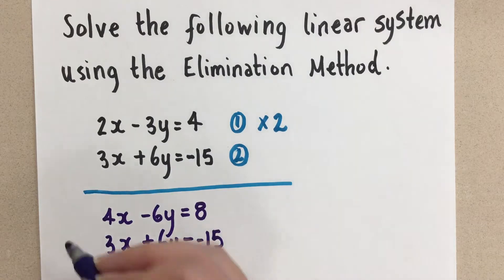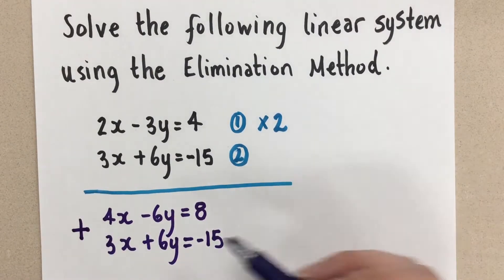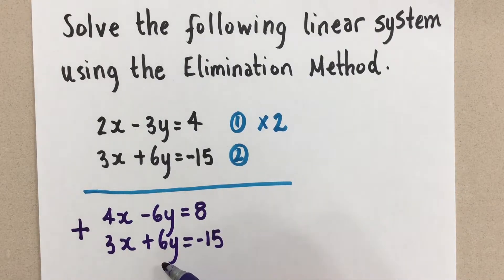So I'm going to choose now to add the equations together. Now, if I had a positive 6 and a positive 6, I would subtract the equations. Because then,